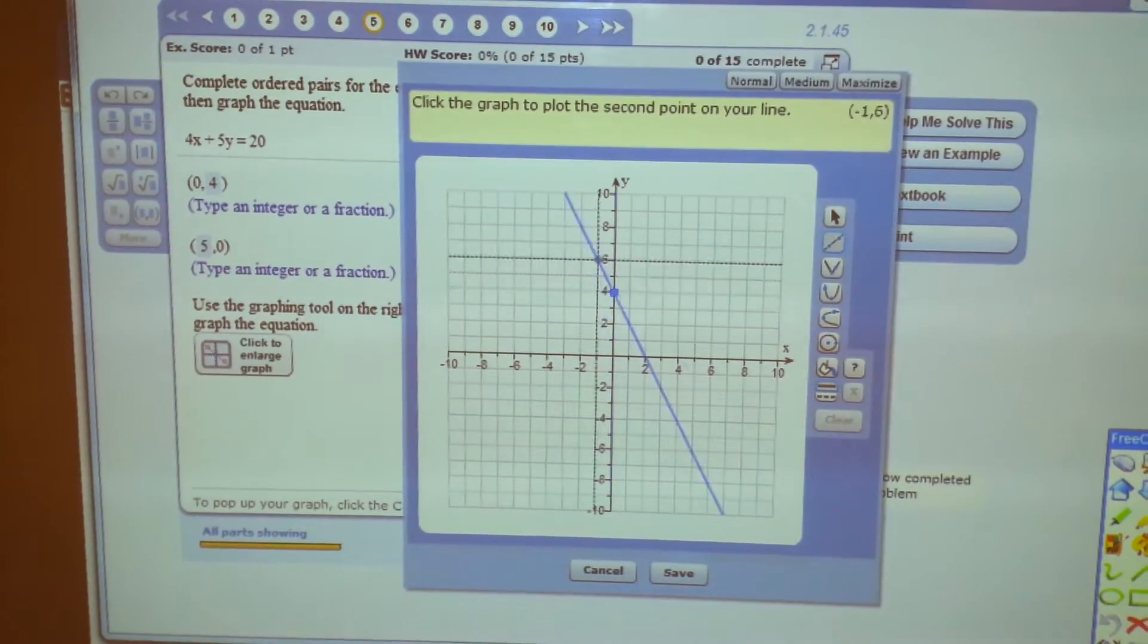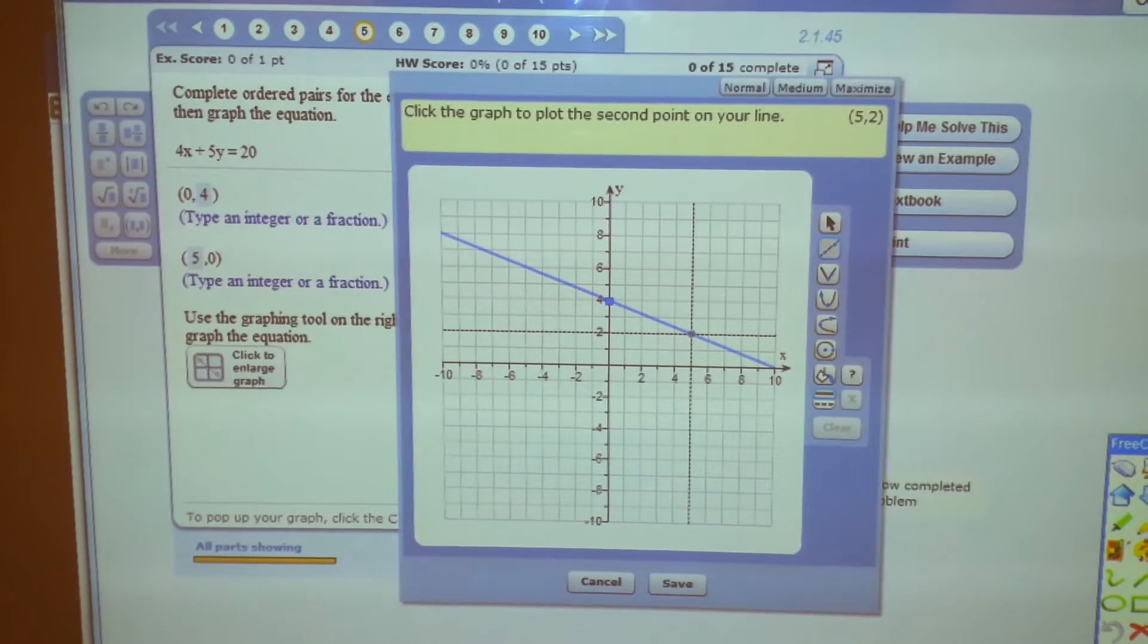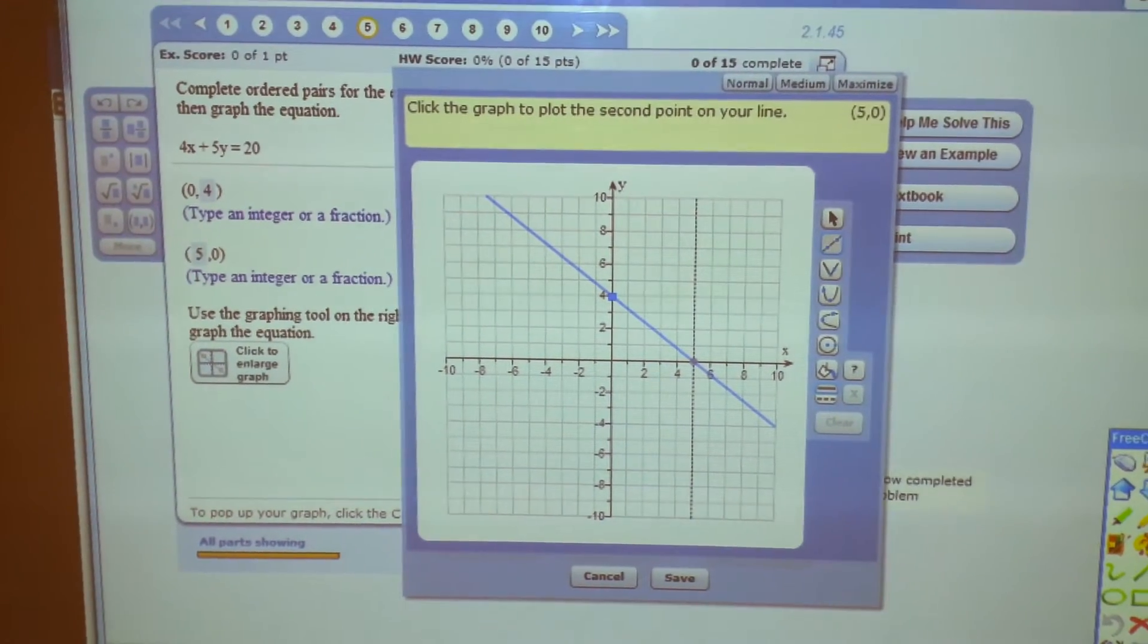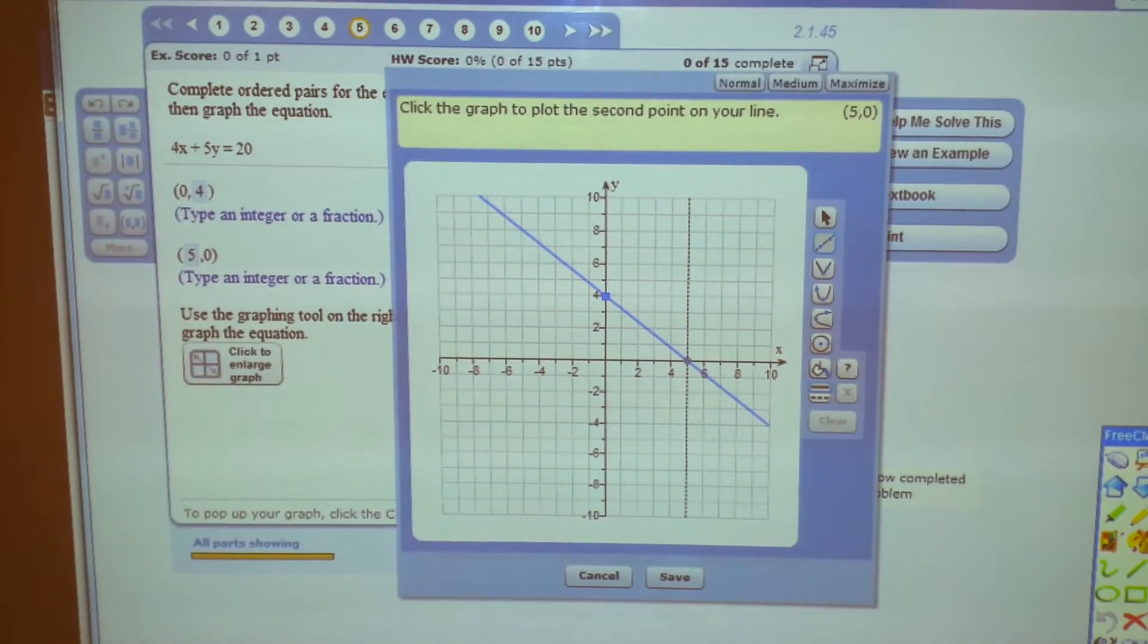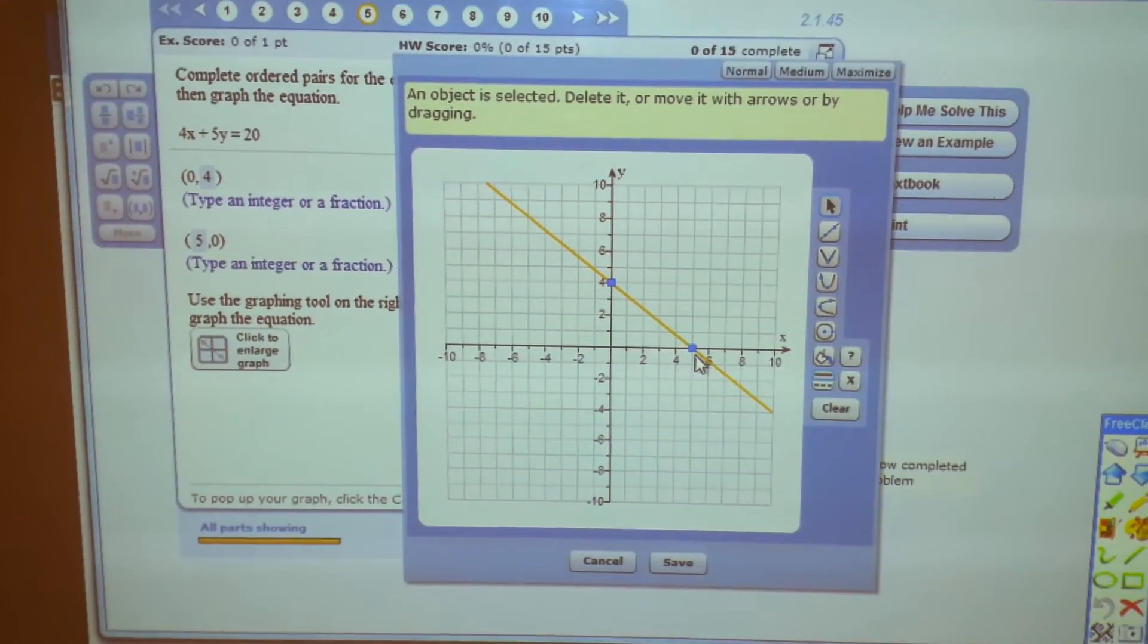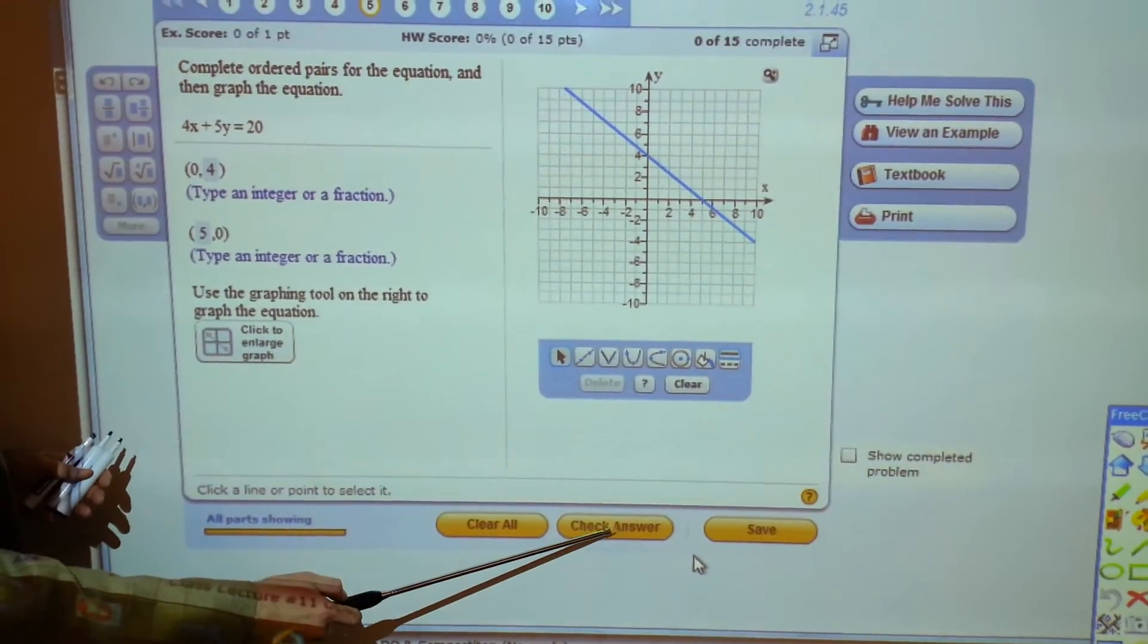Now we've got to plot a second point. Right five, up zero. Notice in the upper right-hand corner, the yellow box. It tells you the point. Now we say save before we check our answer.